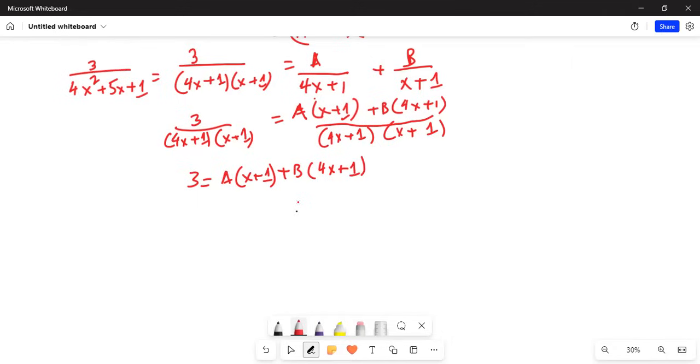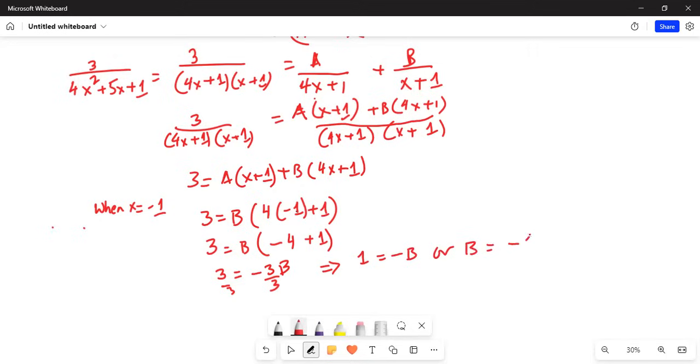When x is equal to minus 1, we have 3 equal to B times 4 times minus 1 plus 1. The term containing A disappears, so we are left with 3 is equal to B times minus 4 plus 1 which is 1 minus 4. 3 is equal to minus 3B. Divide by 3 on both sides, we will get 1 equal to minus B or B is equal to minus 1.